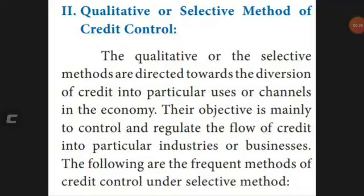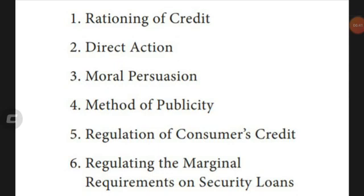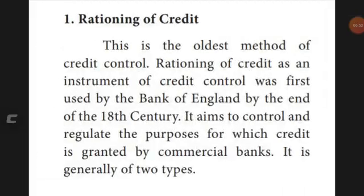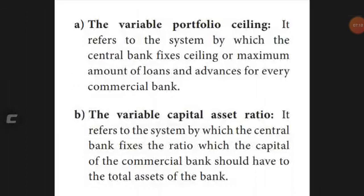Now we move to qualitative or selective methods of credit control. There are six types: rationing of credit, direct action, moral persuasion, method of publicity, regulation of consumer credit, and marginal requirement on security loans. Starting with rationing of credit: this aims to control or regulate credit granted by commercial banks. There are two methods — variable portfolio ceiling, where the central bank fixes a maximum ceiling or limit on the amount of loans and advances for every commercial bank.